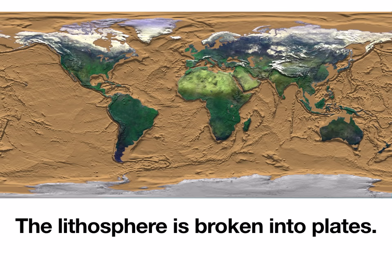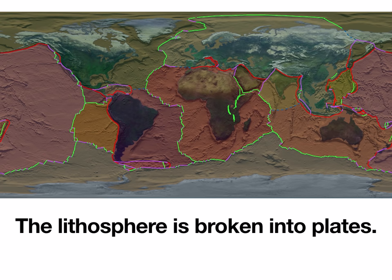The first thing we need to know is this: the outer shell of the earth — which I gave an example of being the magic shell on a scoop of ice cream — this solid outer crust of the earth, we call it the lithosphere, is actually broken into pieces that we call plates. You can call them lithospheric plates, tectonic plates, or simply plates. Some of the plates are all oceanic crust, some are all continental, and some are a combination of the two.